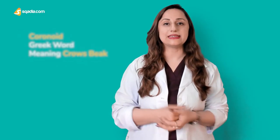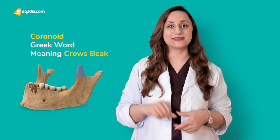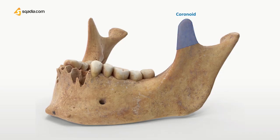The coronoid process: 'coronoid' is a Greek word meaning crow's beak, and it even resembles that shape — it's triangular and flat. Anteriorly it fuses smoothly into the anterior border of the ramus, and posteriorly it forms the U-shaped mandibular notch. The condyloid process is a strong upward projection from the posterior superior part of the ramus.